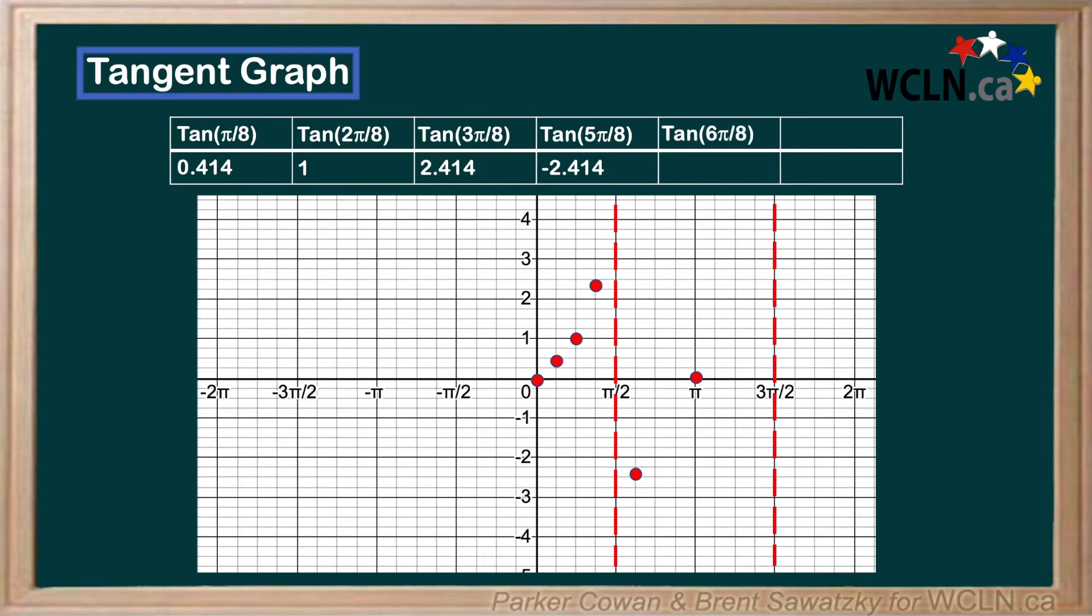Tan of 6 pi over 8 is equal to negative 1, and tan of 7 pi over 8 is equal to negative 0.414. Plotting these points for the rest of the graph reveals that we see a repeating pattern throughout.